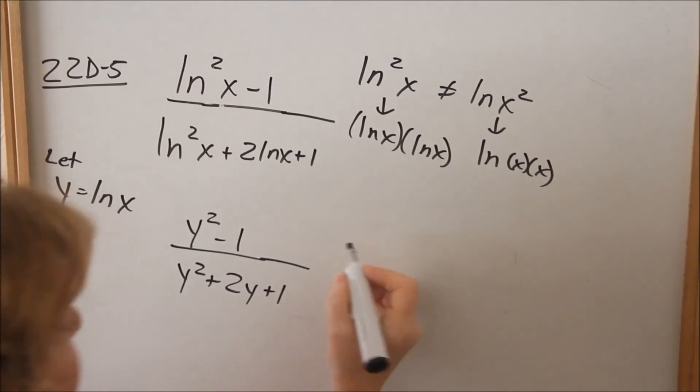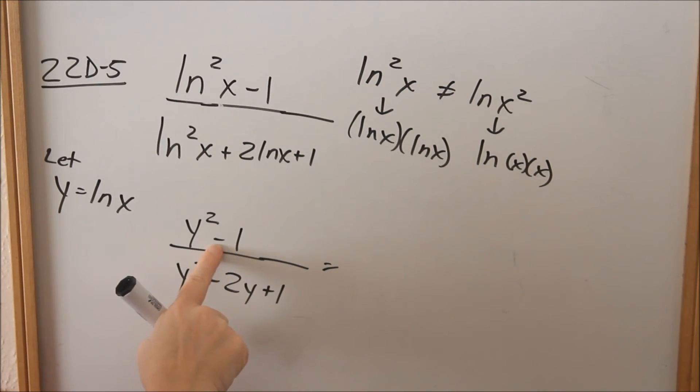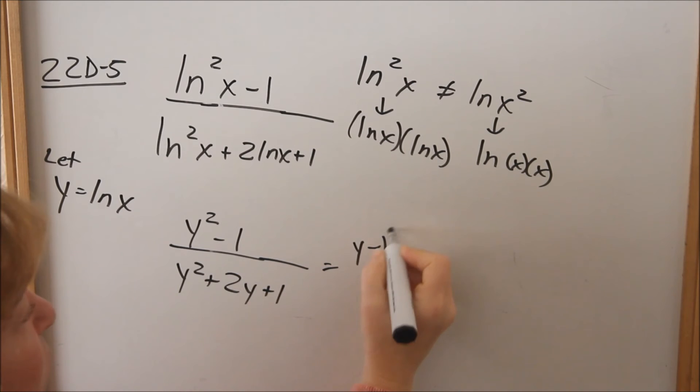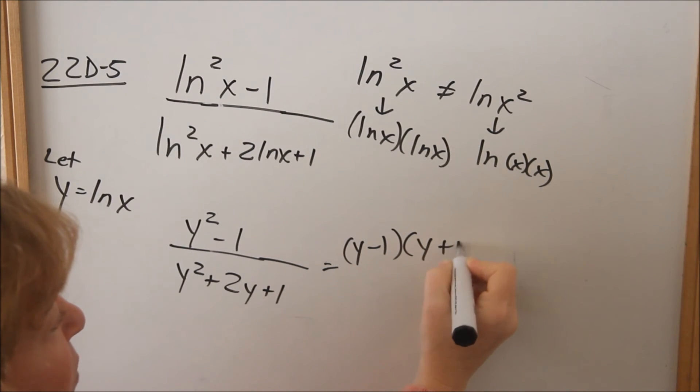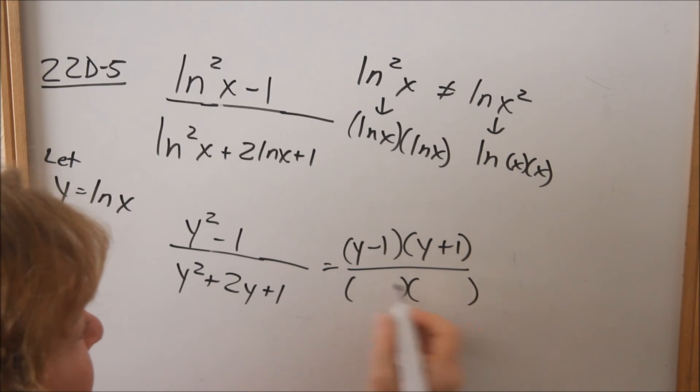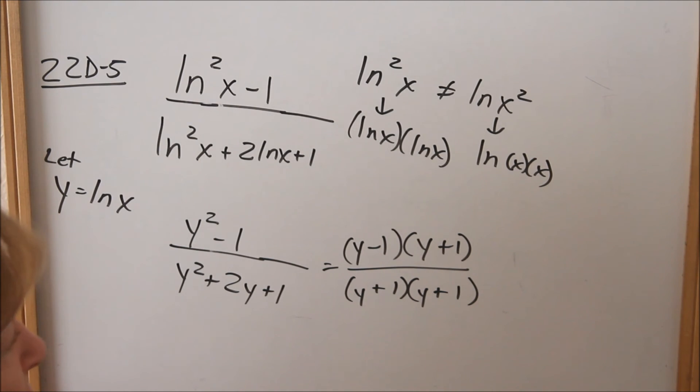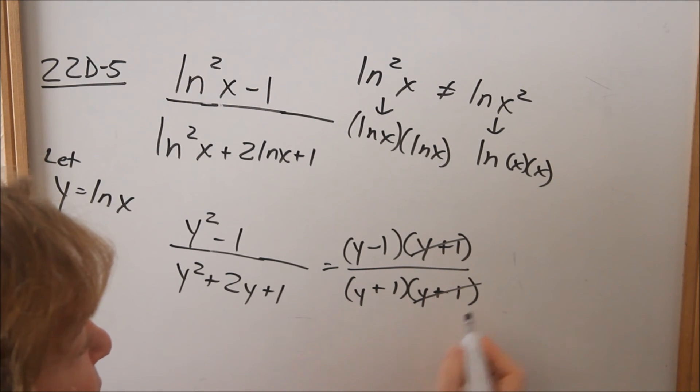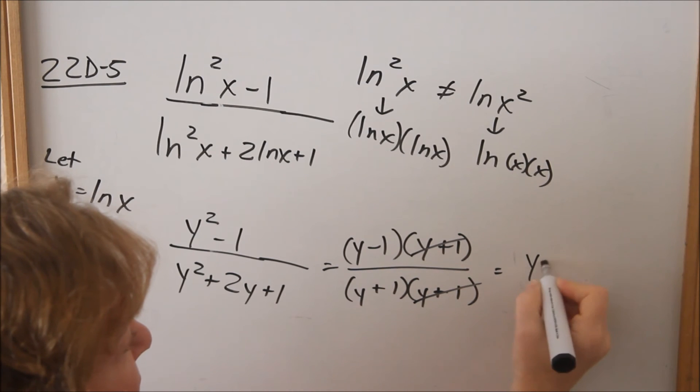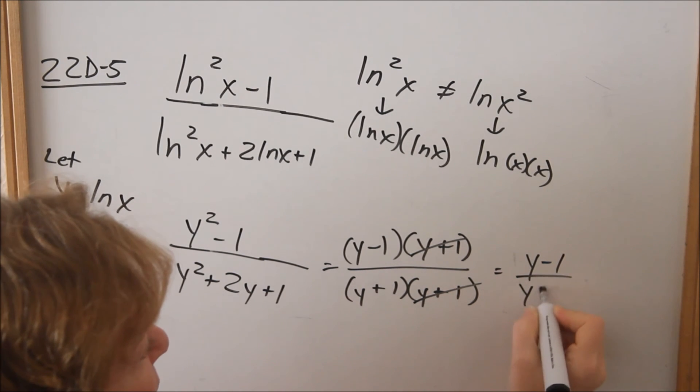Now let's factor this. Difference of two squares: (y - 1)(y + 1). All over—factoring this: y and y. With a positive, the only factors of 1 are 1. Now our (y + 1)'s cancel, and so we have left (y - 1)/(y + 1).